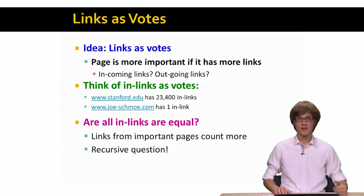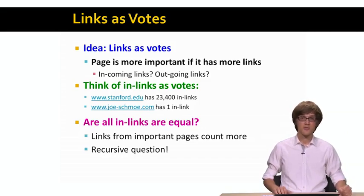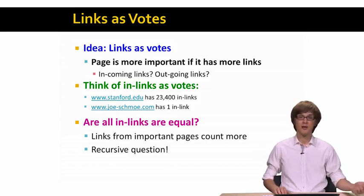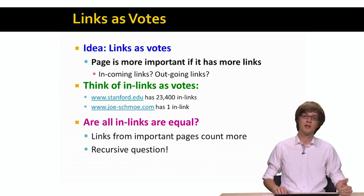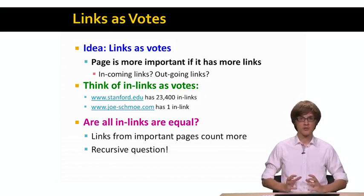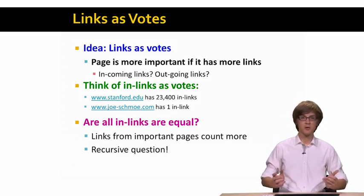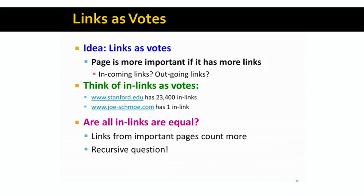It's not enough just to consider in-links; we also have to consider where the link is coming from. A link from a given web page, for example from Stanford.edu, is more important than a link from some other web page that receives very few in-links. Not all in-links are equal — links coming from important pages are worth more. This gives a recursive definition where the importance of a given page depends on the importances of the other pages that point to it, and this importance gets passed on further through the graph.